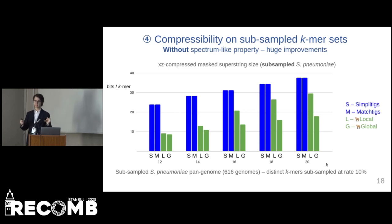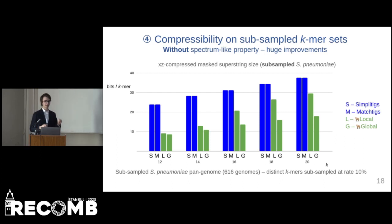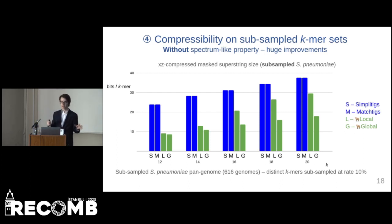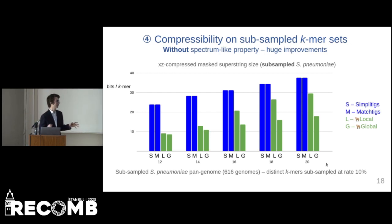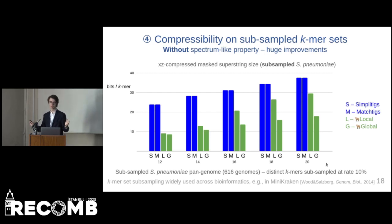In the final experiment, we looked at some more non-traditional datasets. So far we had looked only at standard pangenomics, but now we look at k-mer sets which are subsampled. Both global and local greedy perform much better than matchtigs and simplitigs. This is very notable as subsampling of k-mer sets is used widely across bioinformatics, for example in metagenomics.